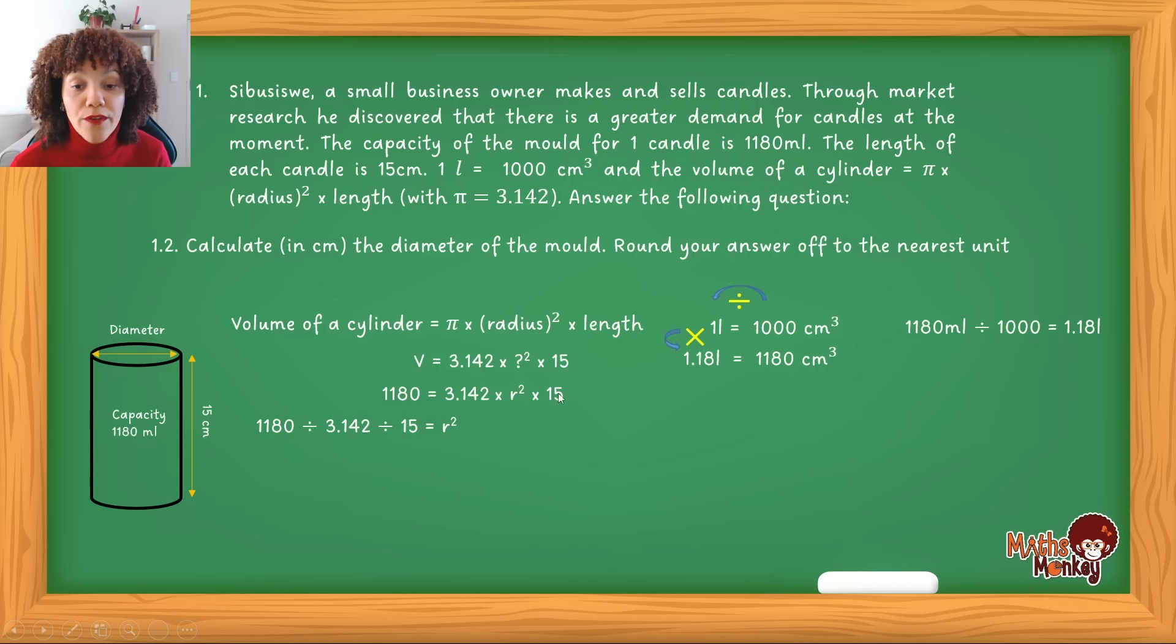Essentially you're going to move everything over the equal to sign and changing the operation to its opposite. And leaving what we're trying to figure out on the right.